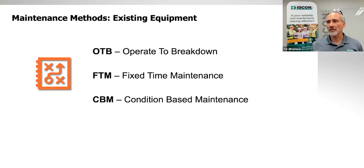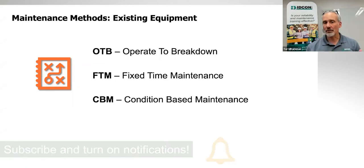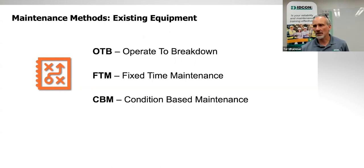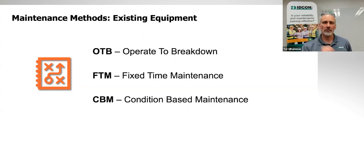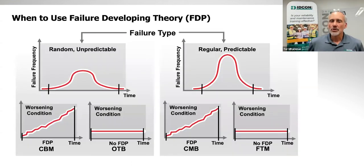If I can't do condition-based maintenance technically — if I can't inspect — then I'm back to operate-to-breakdown or fixed time. It's picking between pest and cholera. Fixed time means I change it out every six months, replace oil every six months, or rebuild it every two years — whatever the interval is.